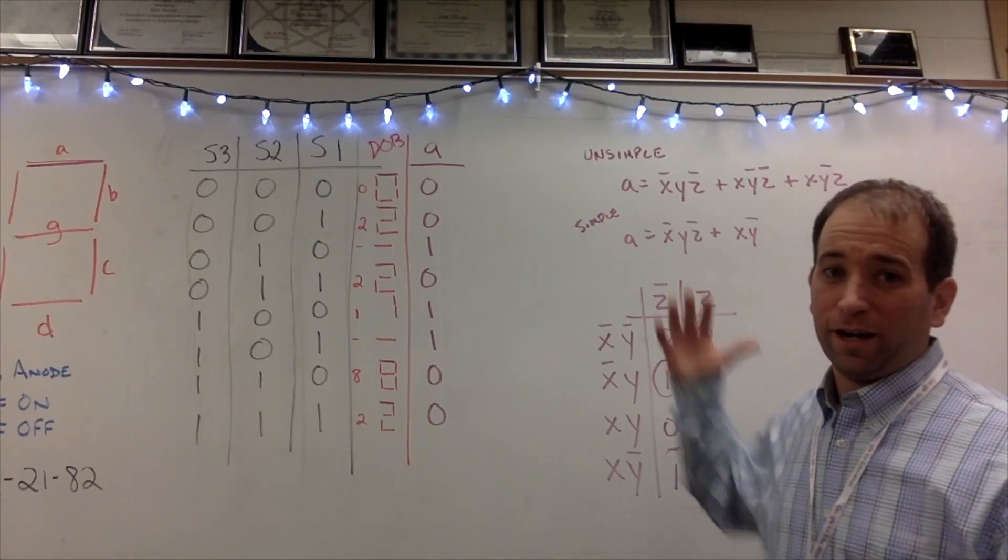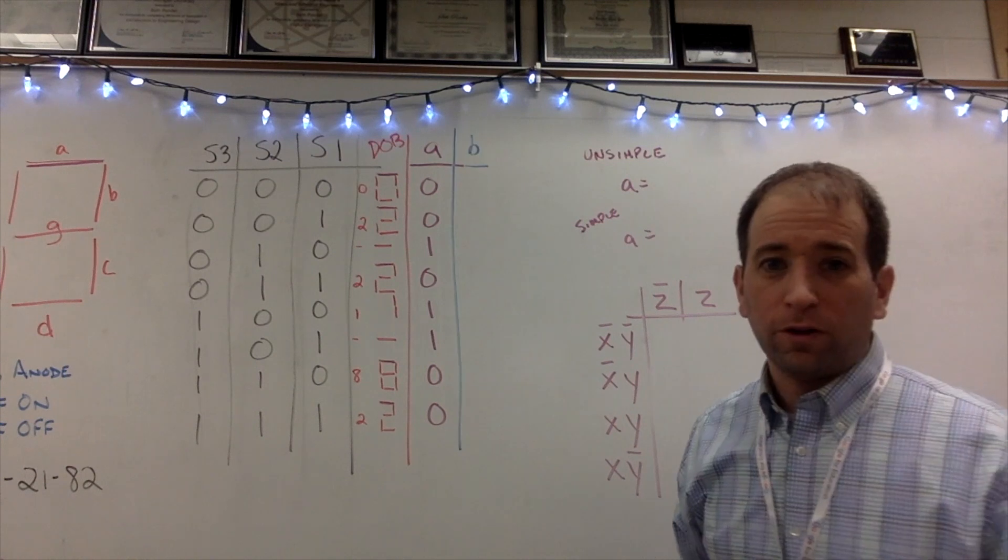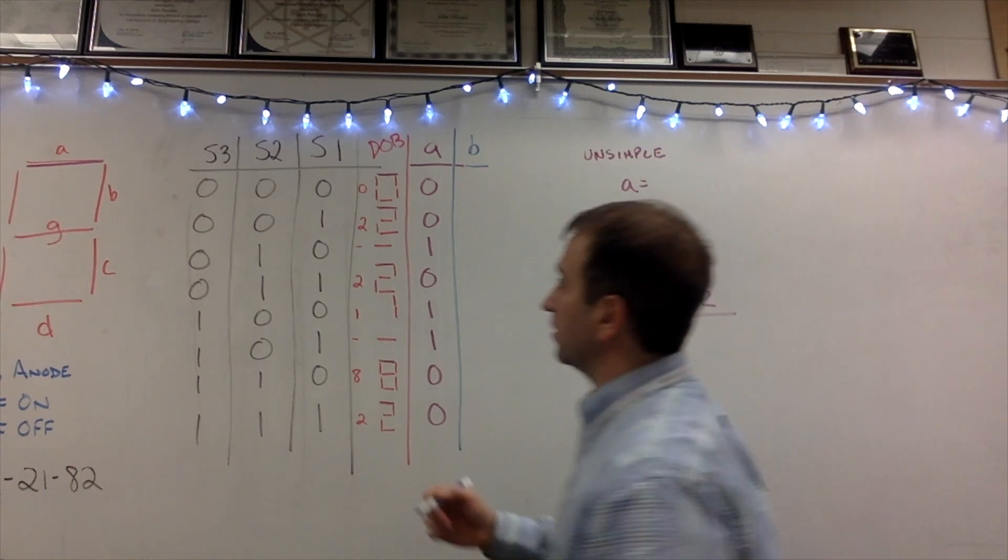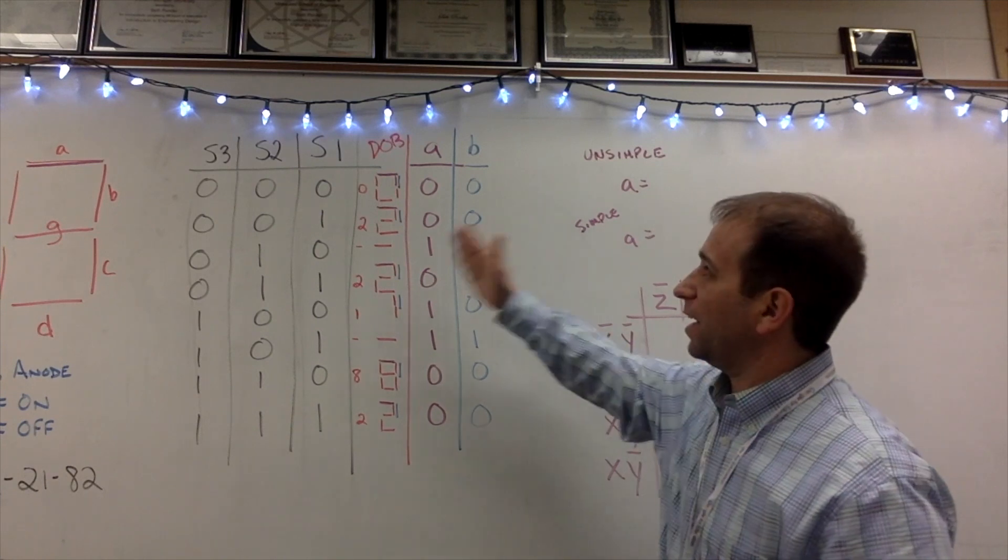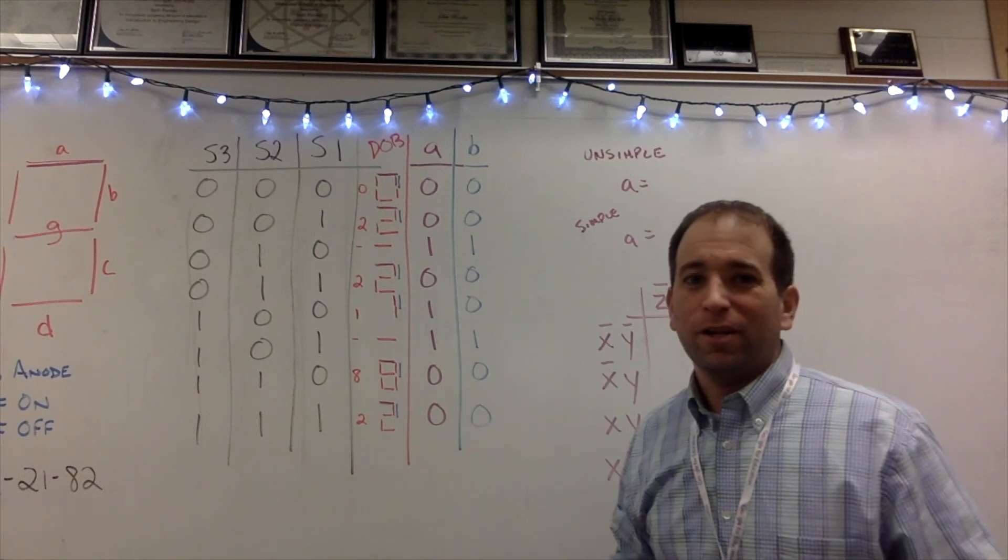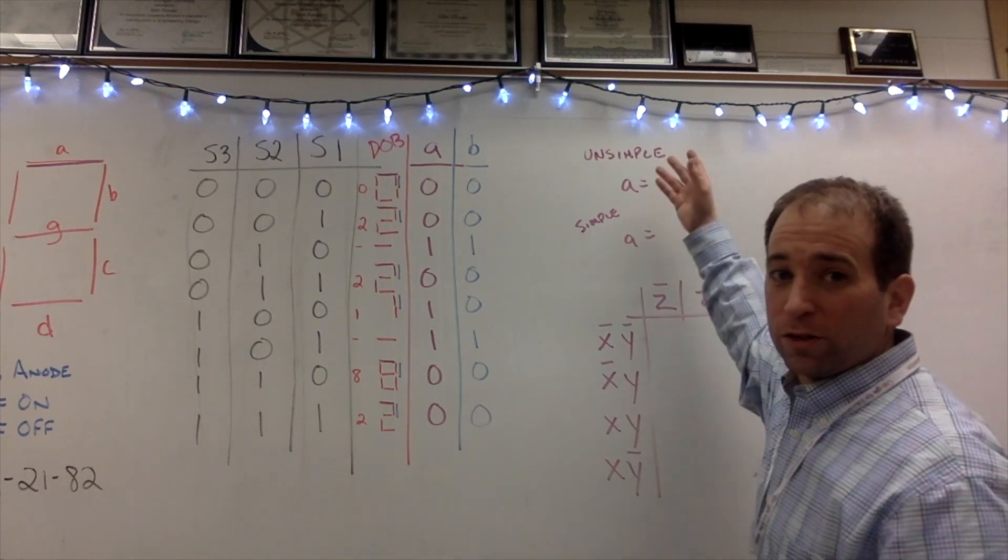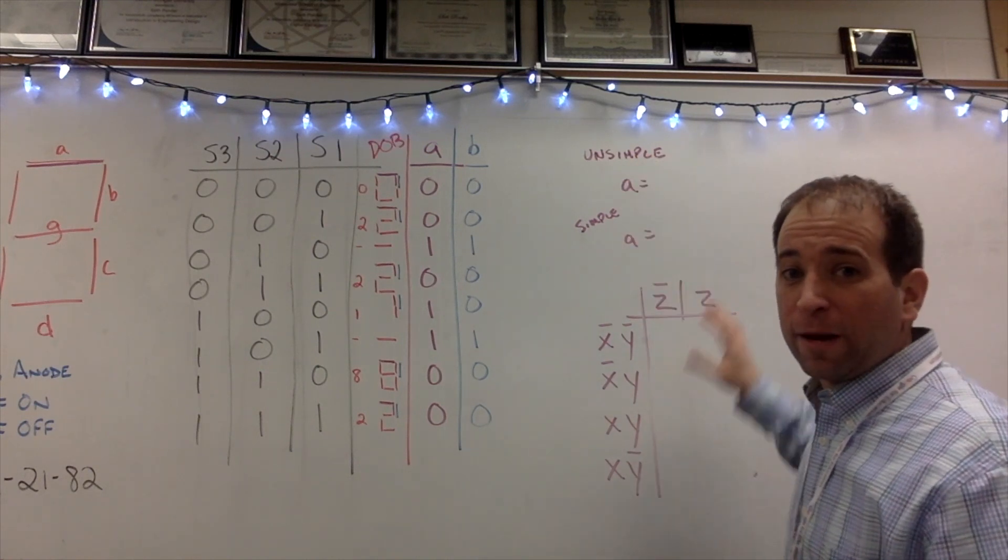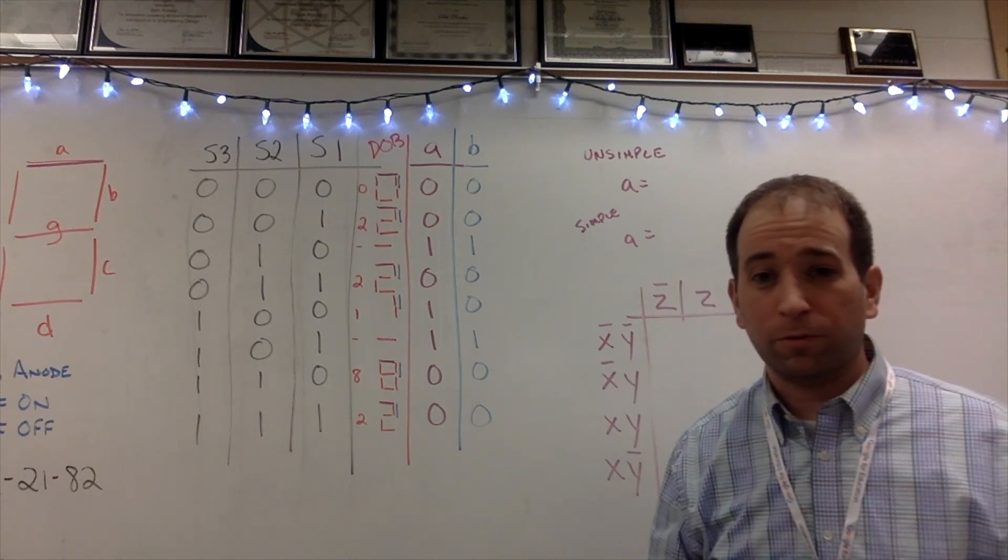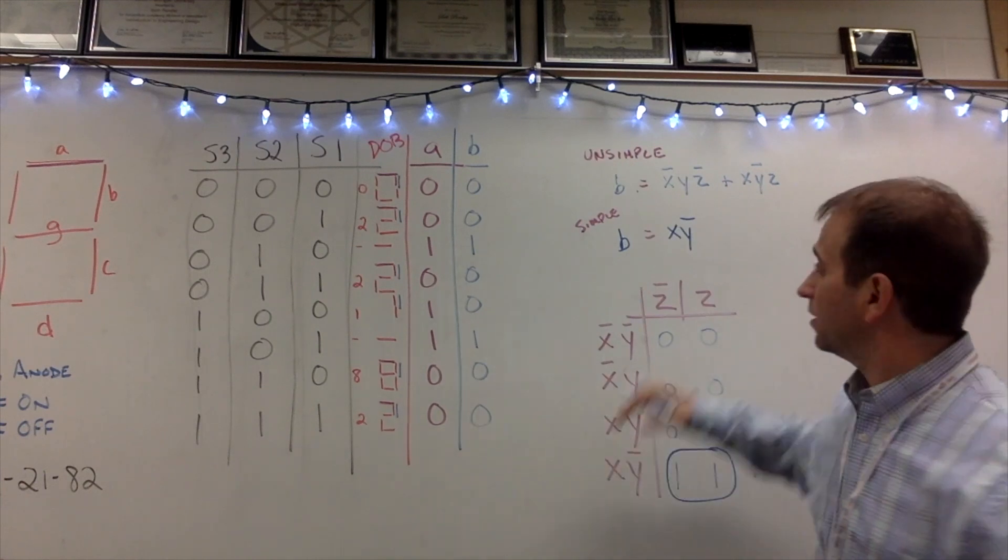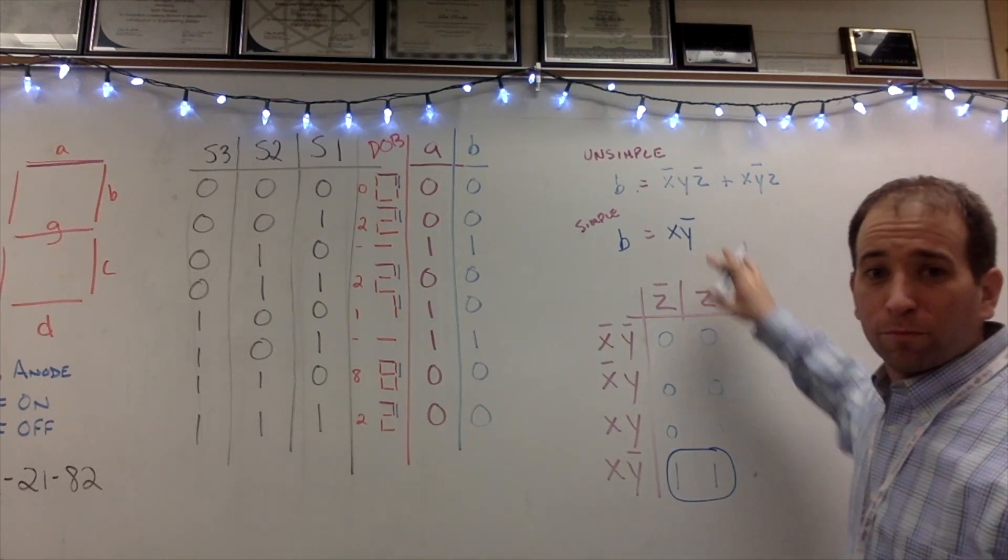I'm running out of whiteboard space and I need to then do B. We're going to look at light B and go through the same process as light A. Unfortunately, we noticed that A and B are different. So we're going to have a different unsimplified product of sums, which means after we do the unsimplified, hopefully we can K map it or use Boolean and get it a little bit simpler. Nice thing for me is my B light simplifies pretty easily.